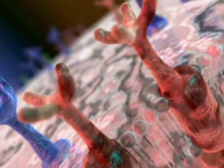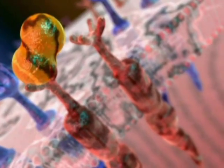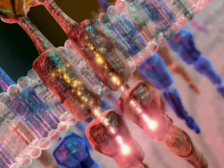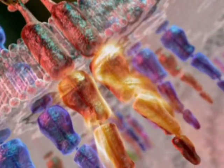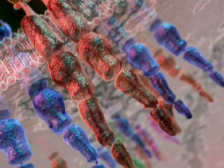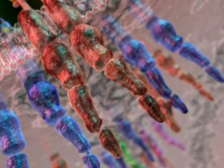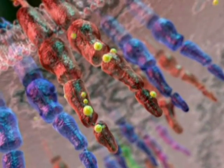VEGF binding causes dimerization of receptors, and this activates the receptor's intracellular tyrosine kinase domain, and autophosphorylation takes place. Autophosphorylation attracts molecules that are crucial for downstream signaling that leads to angiogenesis and lymphangiogenesis.